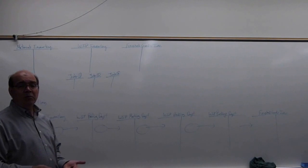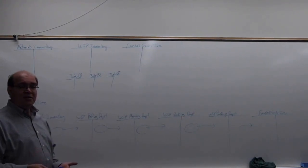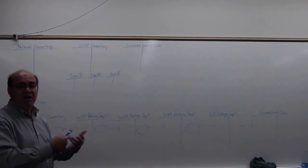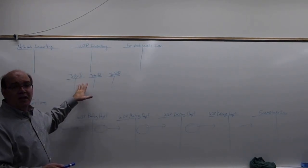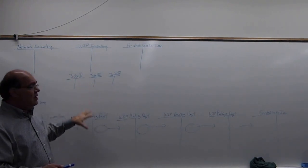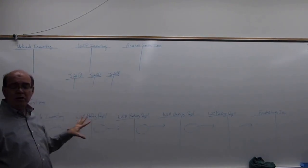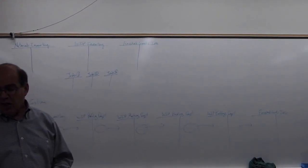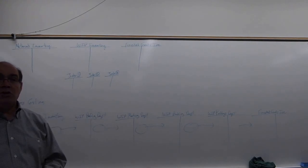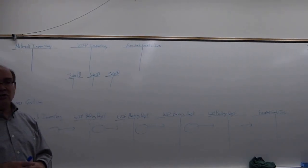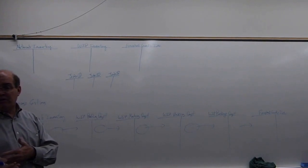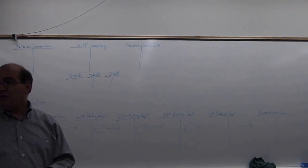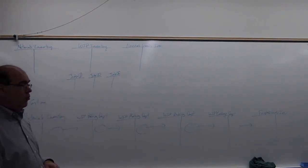Knowing the difference between process costing and job order costing is important because you'll likely see exam questions asking whether a characteristic belongs to process cost or job order. Chapter 17 will discuss process costing further. Both methods pursue the same purpose: tracking how much it costs us for direct materials, direct labor, and manufacturing overhead.